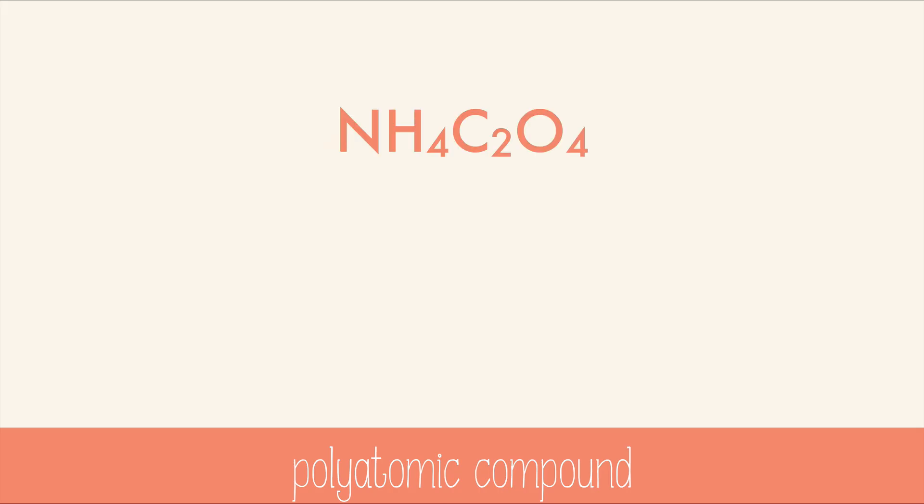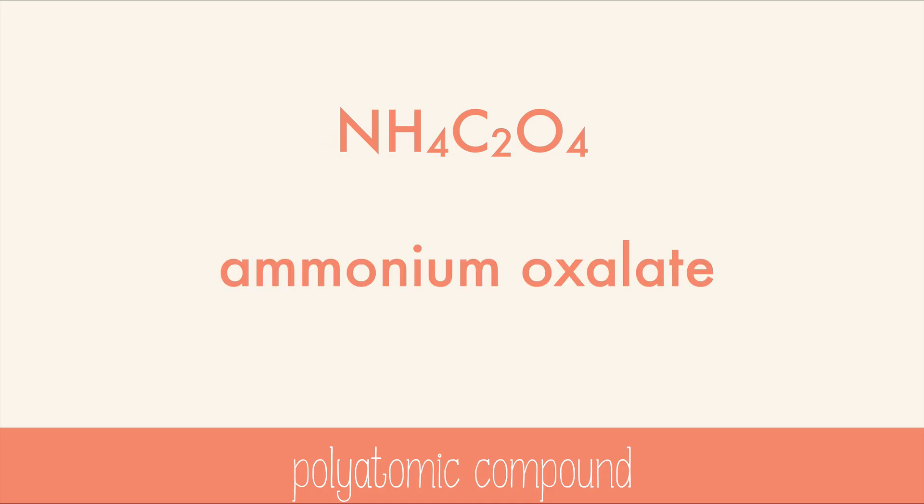You can even have a compound that's made of two polyatomic ions, like this one. To figure out what it is, you may need to look at a list of polyatomic ions, unless you somehow have them all memorized. NH₄ is the ammonium ion, and C₂O₄ is the oxalate ion, so the name of this is ammonium oxalate. It's actually pretty easy — you just have to look up the words.